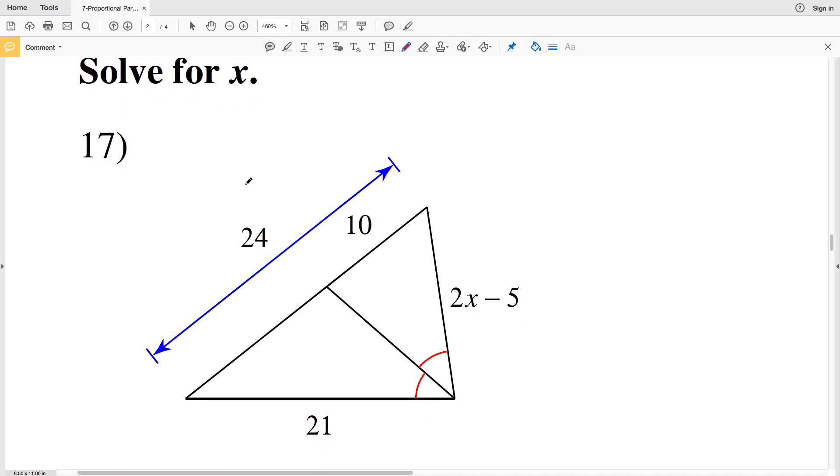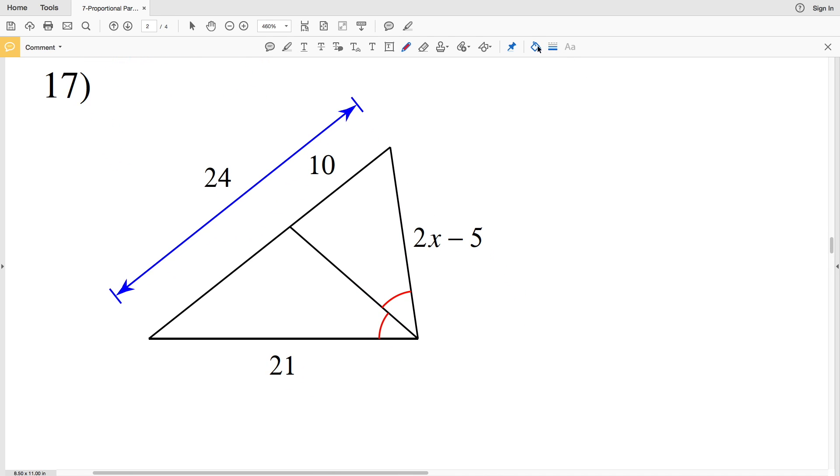Now in number 17 and 18, we'll solve for X using the angle bisector theorem. First I'm going to calculate this length in order to set that up. That length is equal to 24 minus 10, which is 14. So 21 over 2x minus 5 is going to be proportional to 14 over 10.